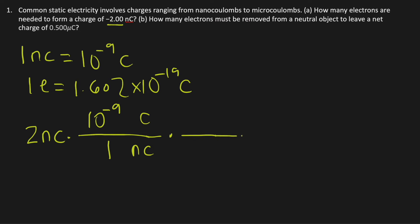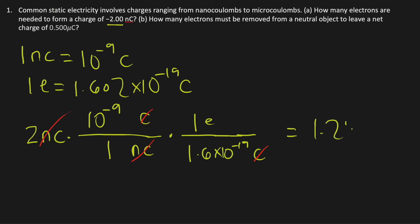Then convert coulombs to number of electrons: 1 electron is equal to 1.602 times 10 to the negative 19th power coulombs. The units cancel out, and you get the total number of electrons, which is equal to 1.248 times 10 to the 10th power electrons. This is the answer for Part A.